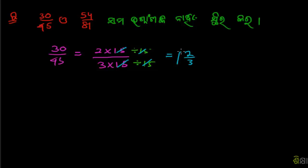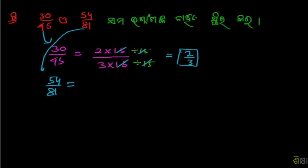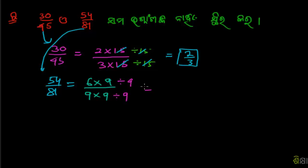2 by 3 — this is 54 by 81. This is how to factorize: this is 54, this is 81.